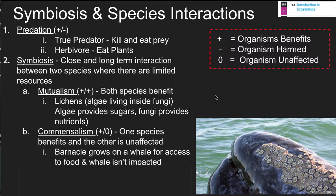Commensalism is a plus-zero relationship — one organism benefits and the other is unaffected. Barnacles on whales are a great example: barnacles get carried around to food and don't have to use energy for their own transportation. The whale isn't really affected in terms of survival — they may look different, but the barnacles aren't hurting the whale in any way.